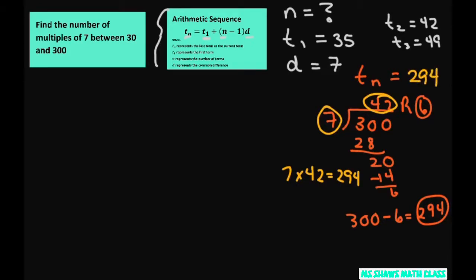And then you just use your formula. So we have 294 equals our first term, which is 35, plus N (the part we don't know) minus 1, times your common difference or your multiple, which is 7. So simplifying that, we're going to get 294 equals 35 plus 7N minus 7.